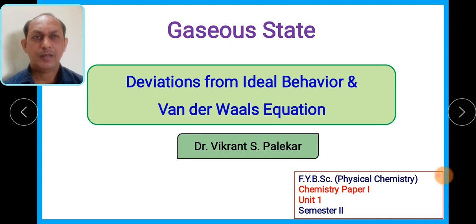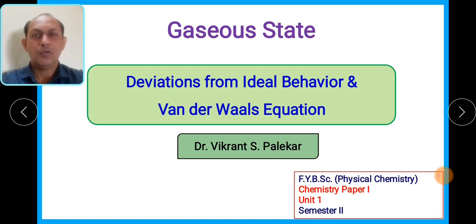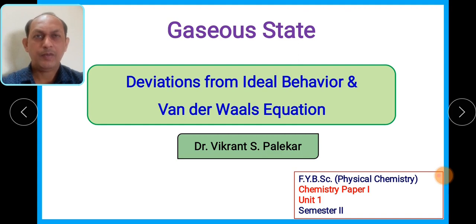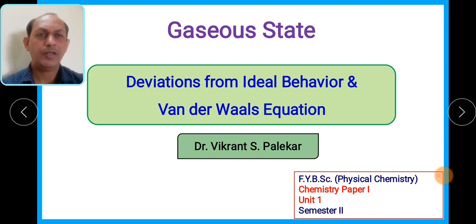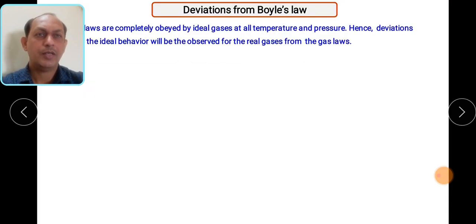We have also seen the concept of ideal gas and real gas. In this particular case we have also seen that gases show deviation from the ideal behavior. Ideal gas obeys the kinetic theory of gases and also obeys all the ideal gas laws. But these gas laws are only obeyed at particular values of temperature and pressure. At increased pressure or lower temperature we find that there is a deviation. We will also see the Van der Waals equation which is associated with this.